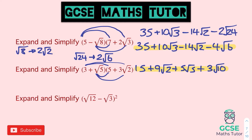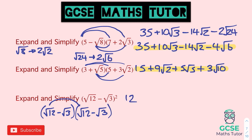On to the final question — a squared bracket, so write it out as a double bracket: (√12 − √3)(√12 − √3). Root 12 times root 12 is the square root of 144, which is just 12. Root 12 times root 3 is root 36, which is 6 — and it's positive times negative, so minus 6. Underneath: another root 3 times root 12, also negative, giving another minus 6. And negative root 3 times negative root 3 gives positive root 9, which is plus 3. Tidying up: 12 take 6 take 6 is 0. Add the 3, and the final answer is just 3.